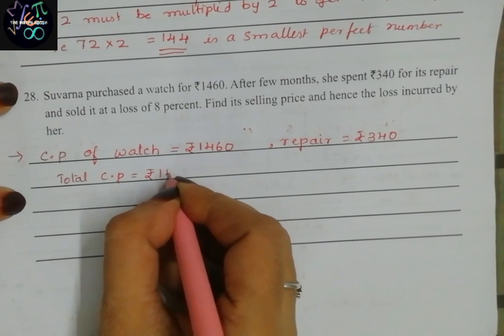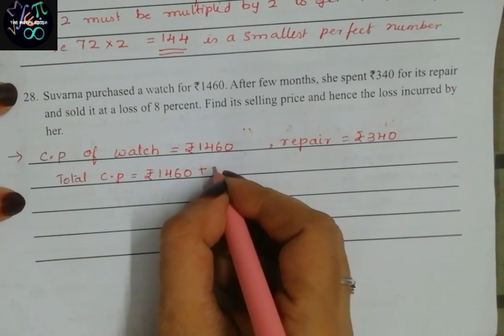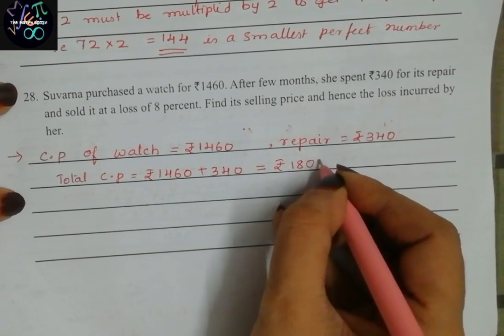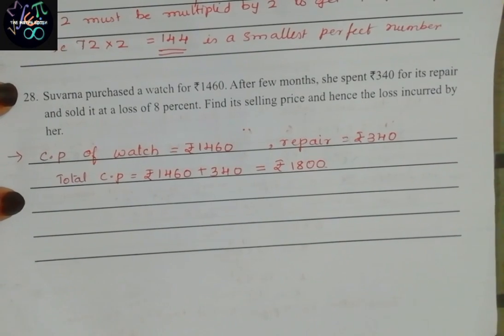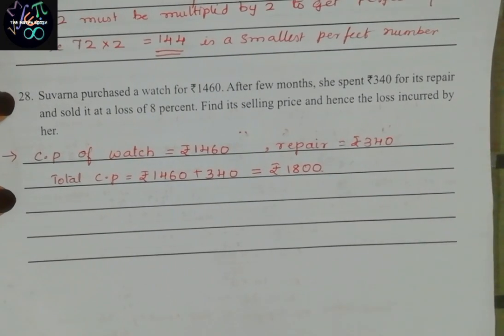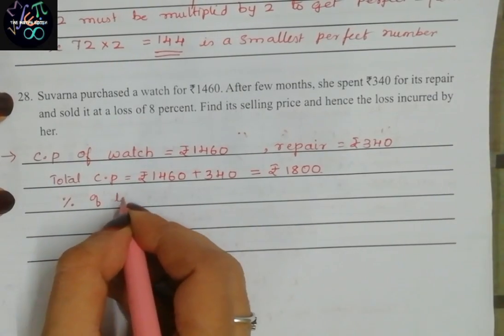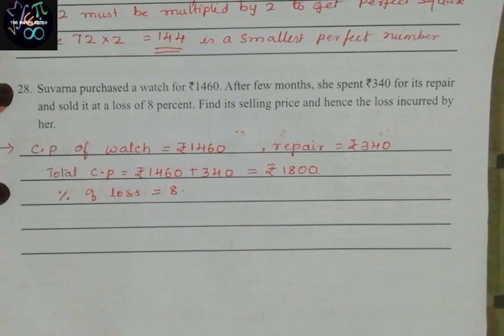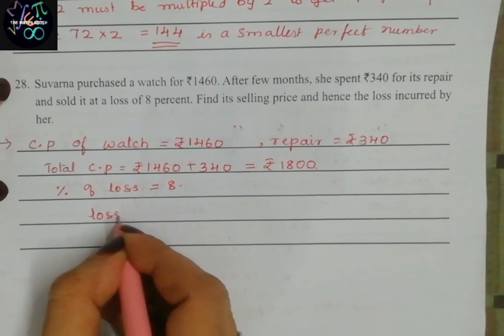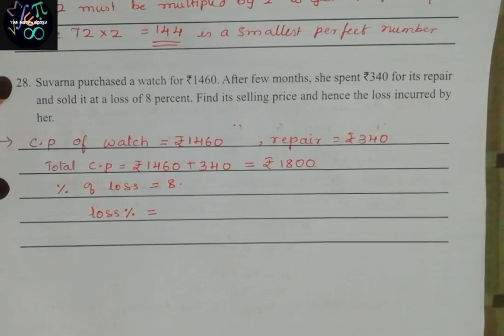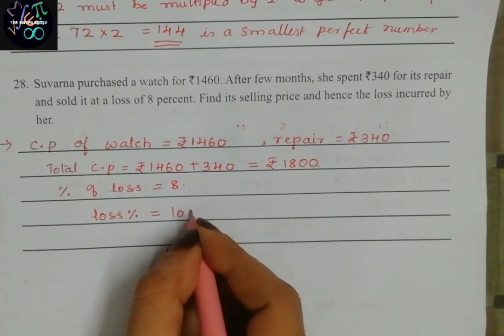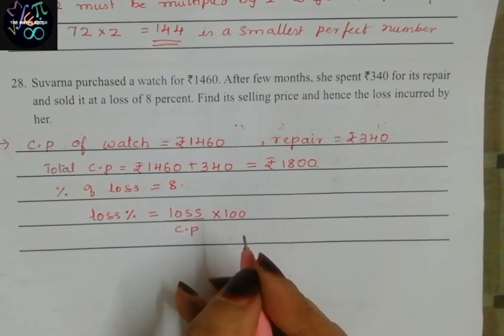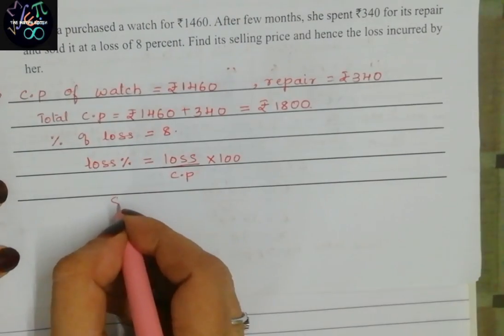The cost price of watch is rupees 1,800. How much percent of loss? Percentage of loss is 8%. Now we have the formula to find loss: loss percent equals loss divided by CP into 100. This is the formula because loss percent we have, which is 8, but loss we don't know.